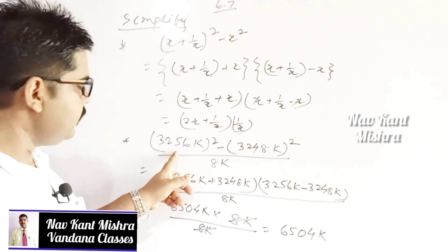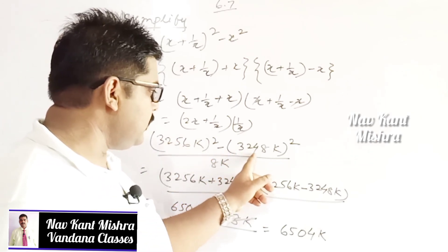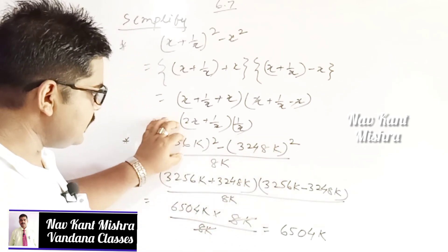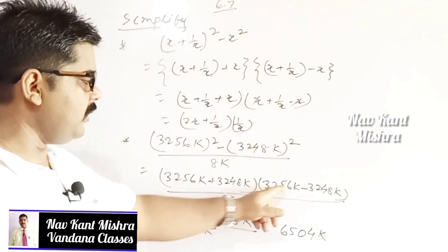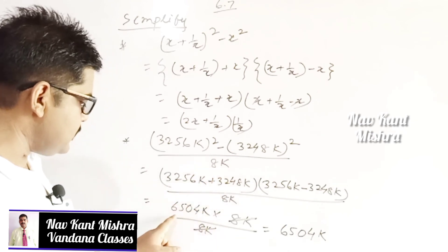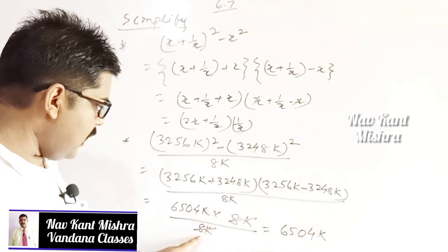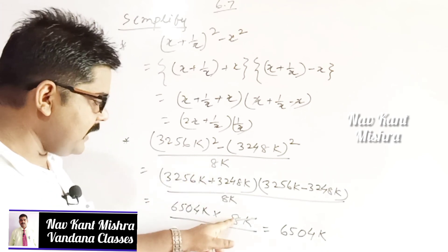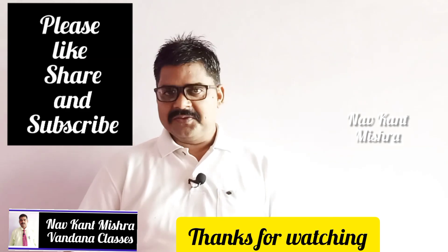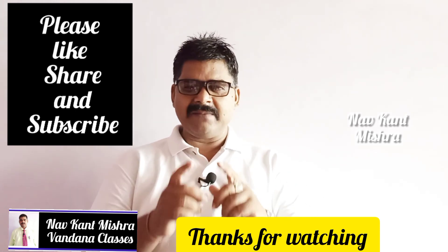Similarly, for 3256k square minus 3248k whole square, consider 3256k as a and 3248k as b. Applying a plus b into a minus b: adding gives 6504k, and subtracting gives 8k. The 8k in numerator and denominator cancel, so the final result is 6504k.